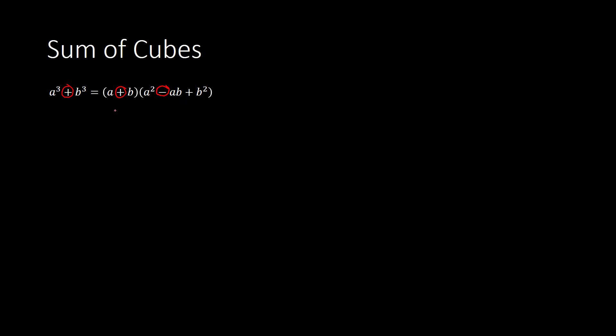If you have a difference of cubes — a cubed minus b cubed — this becomes a minus b. This becomes a squared plus ab, and then this still remains as plus b squared. Use that to try to pick up on the patterns with these other examples.